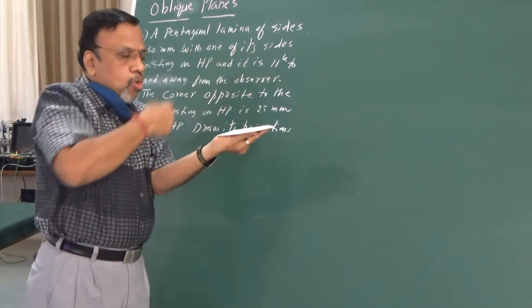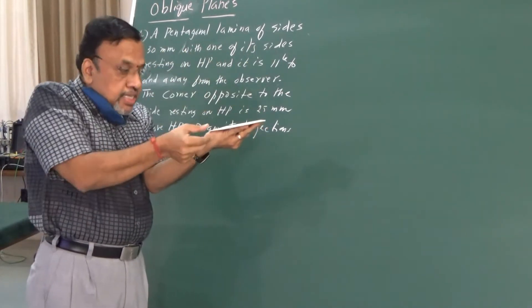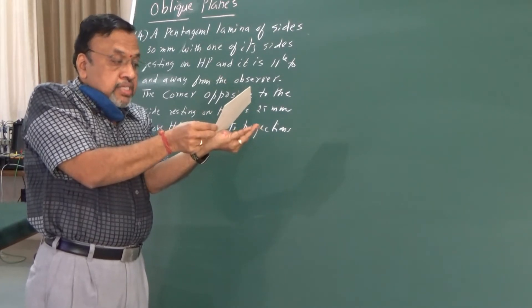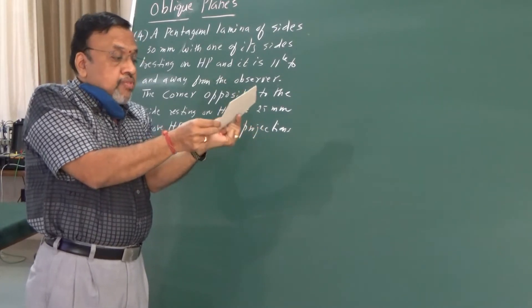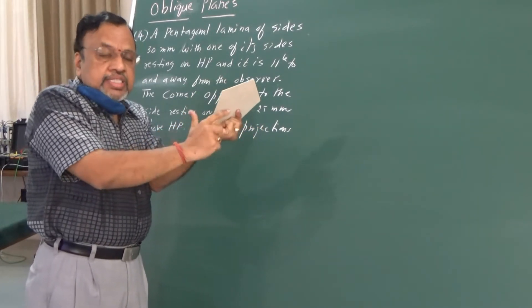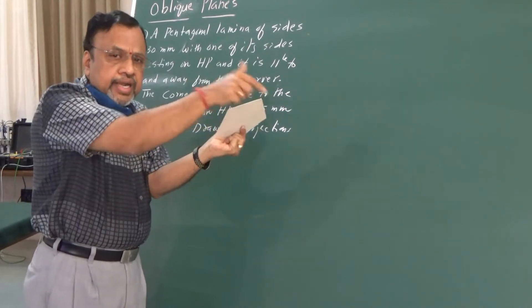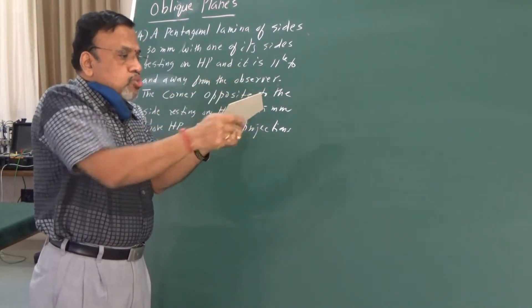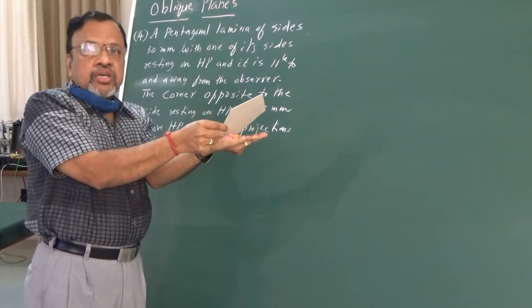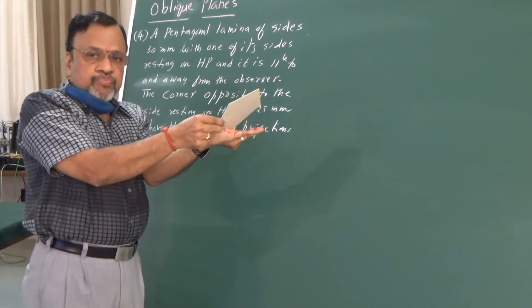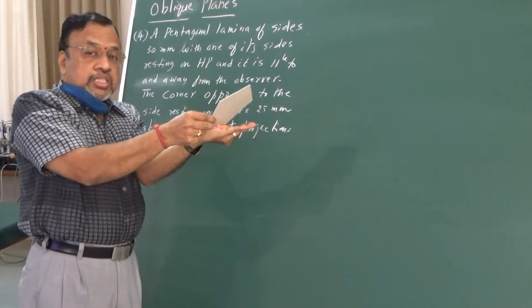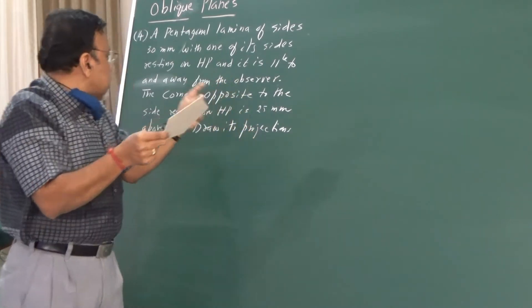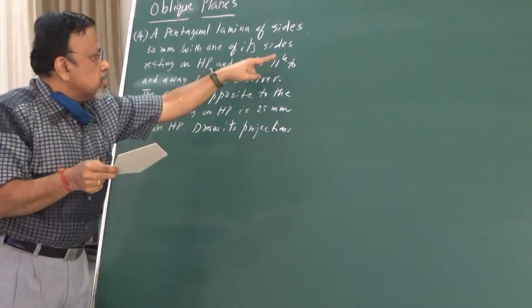In the second stage, I am going to lift the lamina. But in this particular case, instead of giving directly the surface inclination, I have given indirectly that the corner opposite the side is at a distance of 25 mm. In the third stage, it is given — let us now compare this particular sentence.